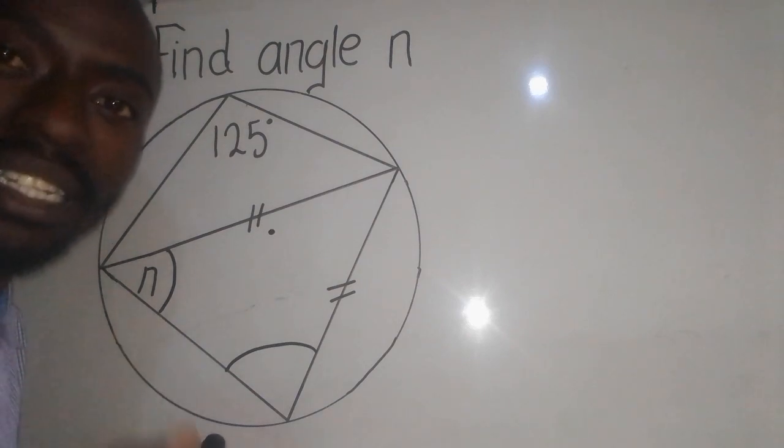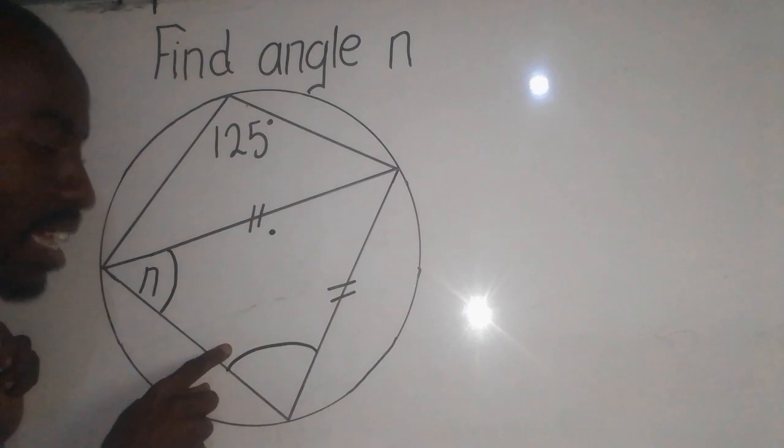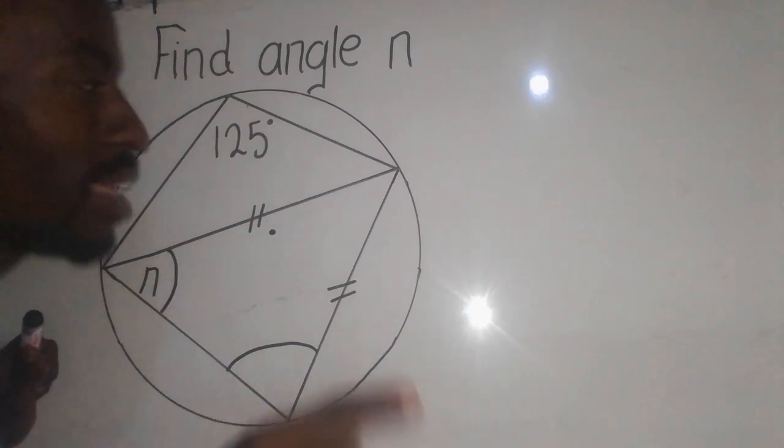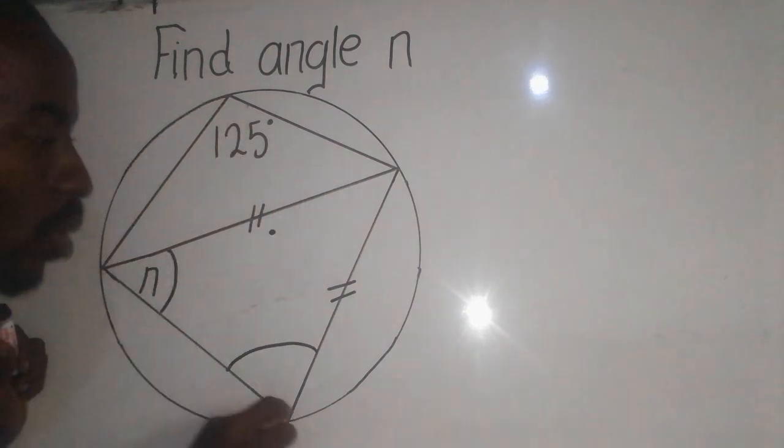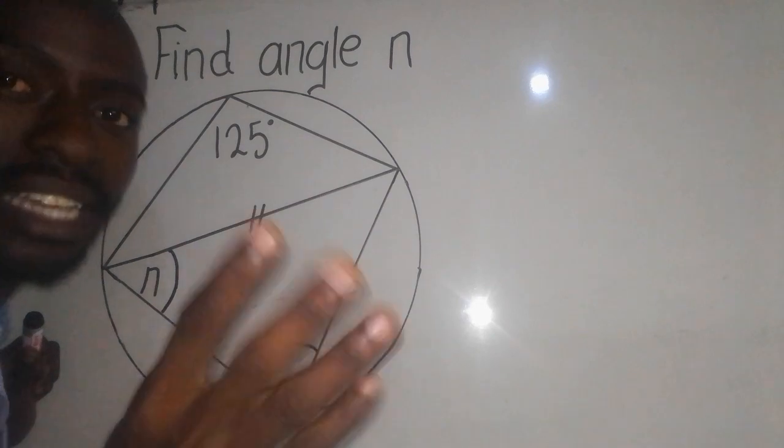That simply means that if you add this angle and this angle they're supposed to give us 180. Remember that this here is a quadrilateral. When I say quadrilateral, it simply means that it has four sides: one, two, three, four.